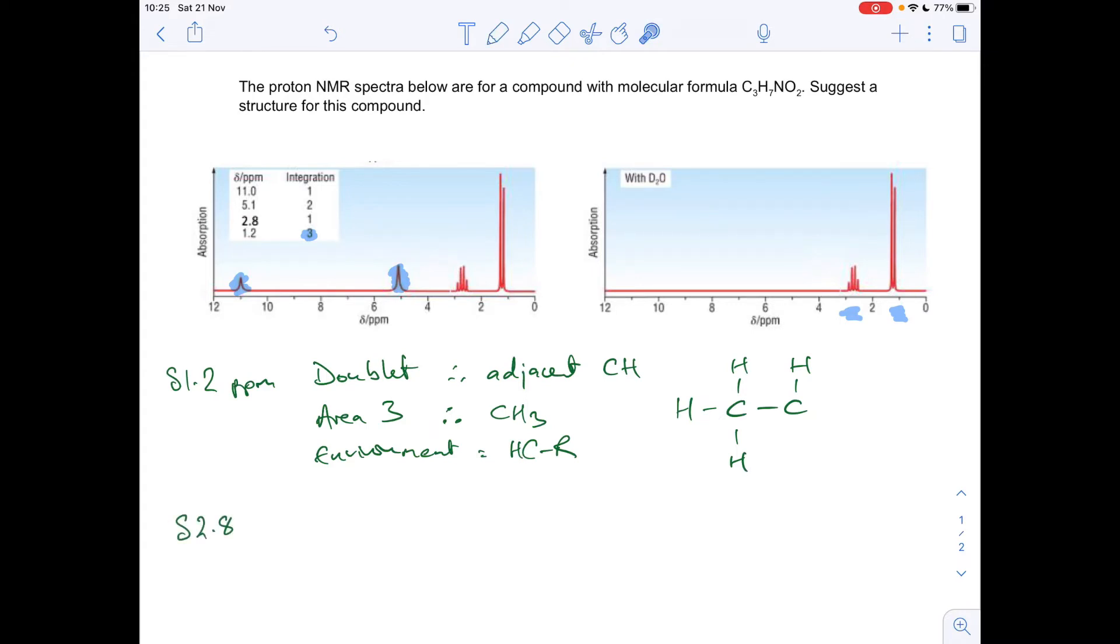So moving on to delta 2.8 now. So this one here. We're going to do exactly the same. So this is always the format that I say to my students to put your answers in. So what have we got? We've got a quartet. Therefore, there must be an adjacent CH3. It's got an area of 1. So there's 1 proton in the environment. So it must be a CH.